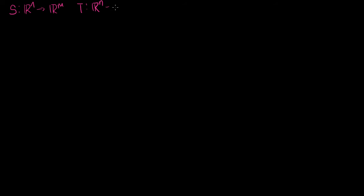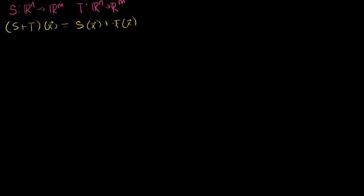In the last video, we started off with two linear transformations. We had the linear transformation S that was a mapping from Rn to Rm, and then we had the linear transformation T that was also a mapping from Rn to Rm. We defined the addition of these two transformations: S plus T of X equals S of X plus T of X. The input is from Rn, and each output is a vector in Rm. Since Rm is closed under addition, S plus T is still a mapping from Rn to Rm.